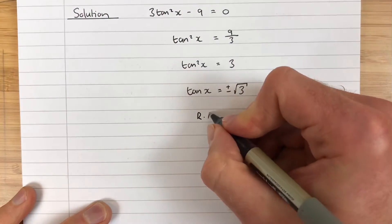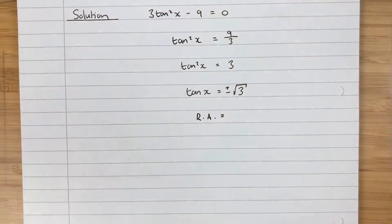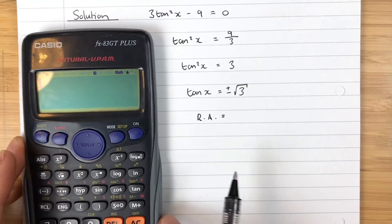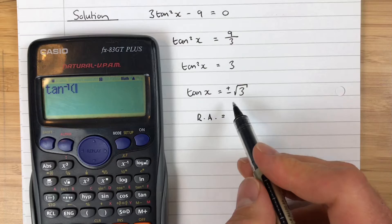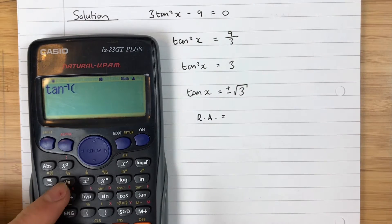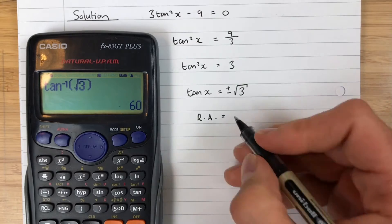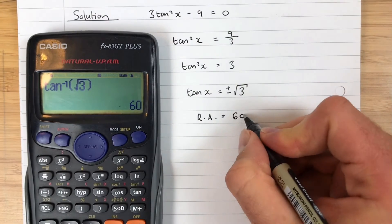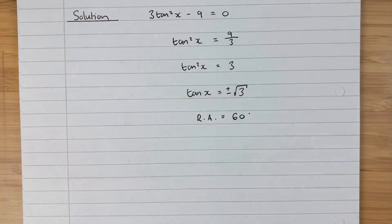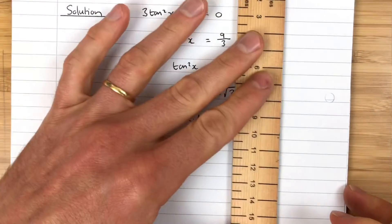Okay, now we can go away and solve this. Related angle equals—I could use my exact value triangle because it's root 3, I'm not going to. I'm going to use a calculator for this one. Inverse tan of root 3 gives us 60. So my related angle is 60.